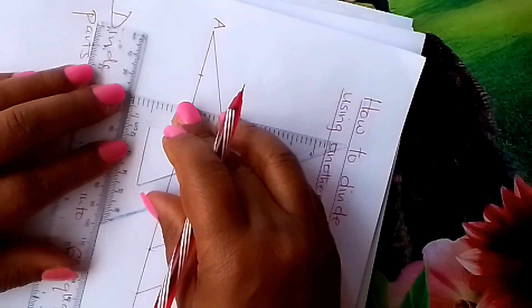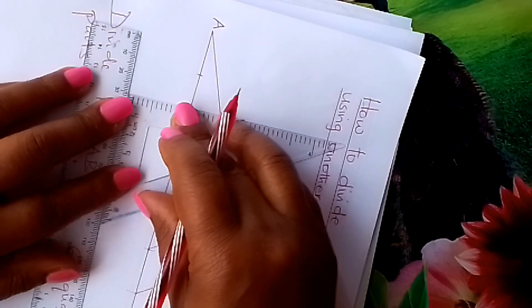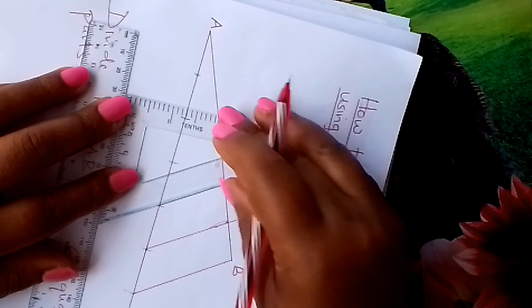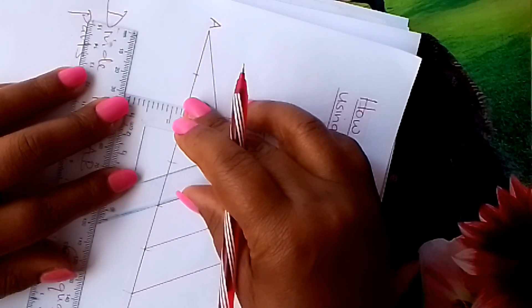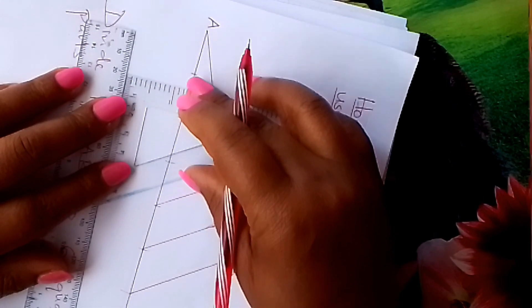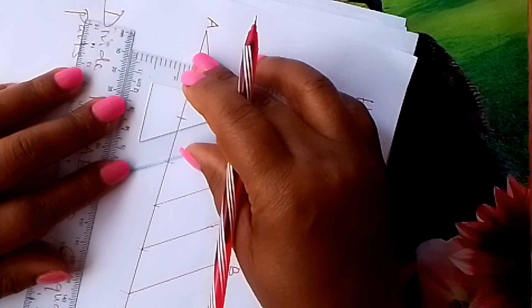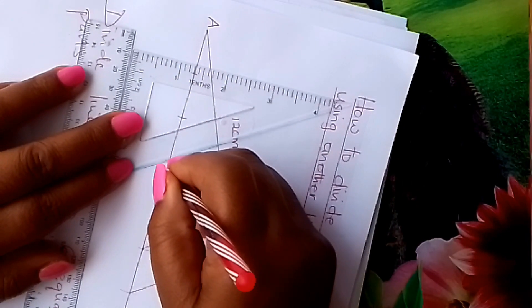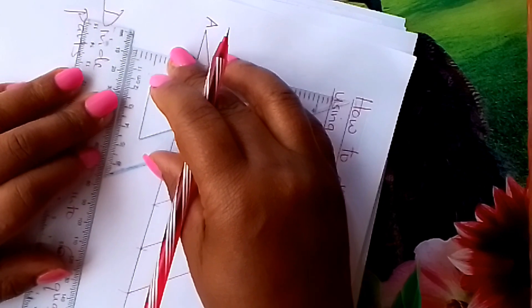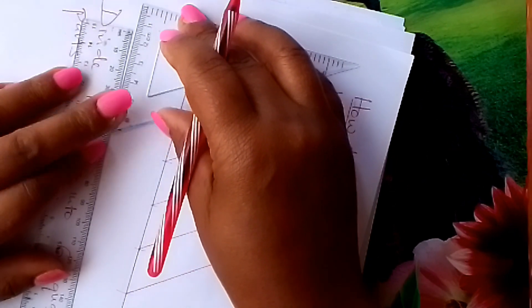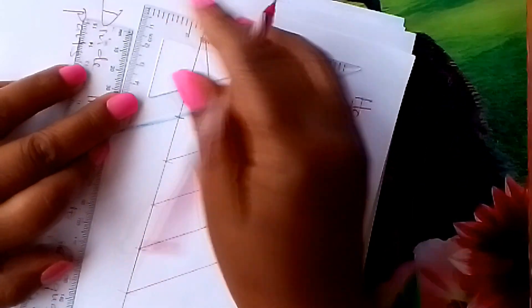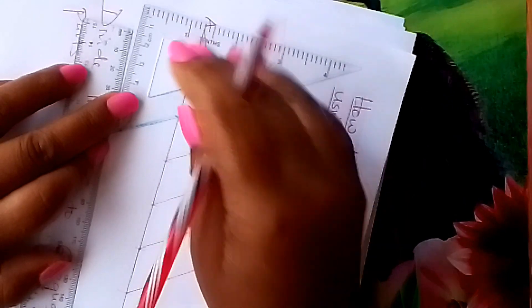Then you continue like that, still holding the set square with your ruler. You move parallel. There we are. You draw another line. You move on like that, learner. Once you get to this other one, draw a line.